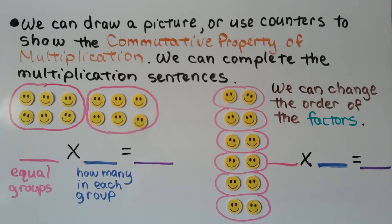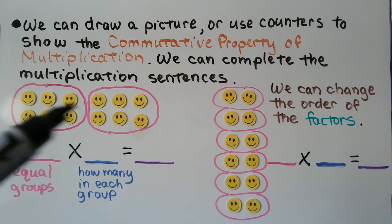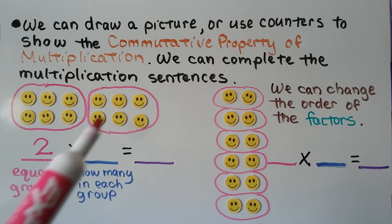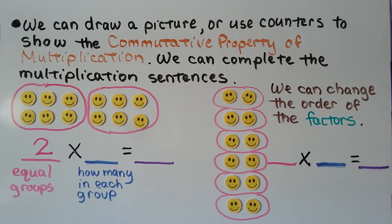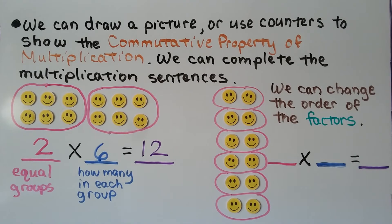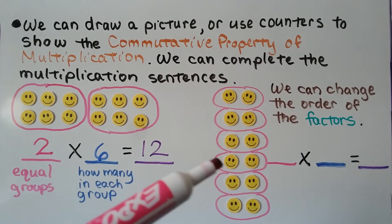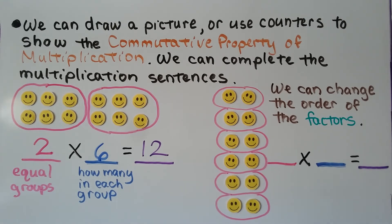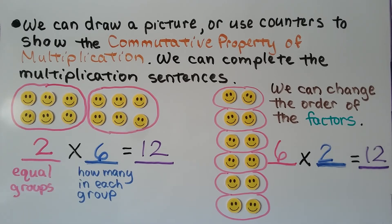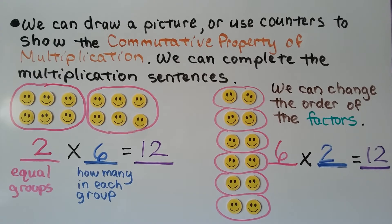We can draw a picture or use counters to show the commutative property of multiplication and complete the multiplication sentences. If you look here, how many groups do we have? We have 2 equal groups, and they have the same amount inside. How many are in each group? There are 6. 2 times 6 is equal to 12. We can change the order of the factors and make 6 groups — 1, 2, 3, 4, 5, 6 groups — with 2 in each group. 6 times 2 is equal to 12. 2 times 6 is equal to 6 times 2. We changed the order of the factors, and the product stayed the same.